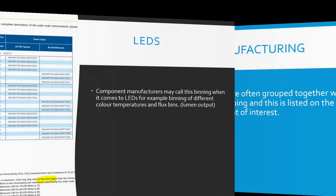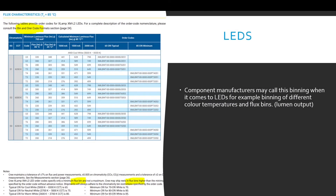For example, LEDs. Component manufacturers may call this binning when it comes to LEDs — for example, binning of different color temperatures and flux bins or lumen output. You can see the highlighted sections here; it says the bin and order code.